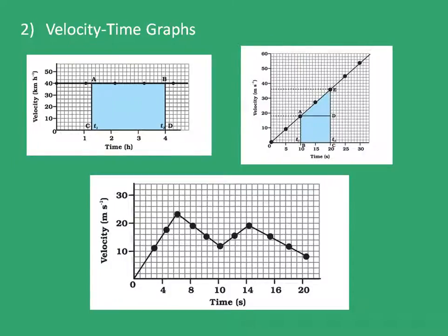Now we come on to velocity time graphs. In velocity time graphs we can have three different types of graphs. The first one is the constant velocity graph. The second is a velocity which is constantly increasing, and the third is a velocity which is increasing and then decreasing and then increasing — that is, it has different accelerations at different intervals of time.